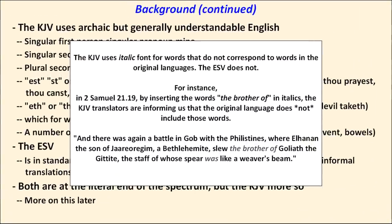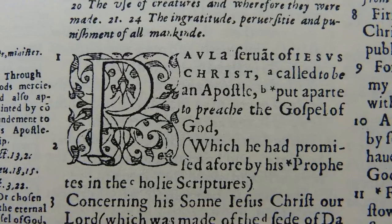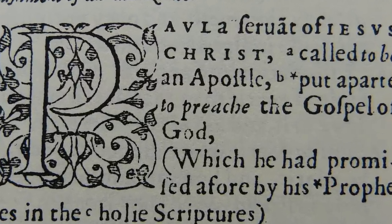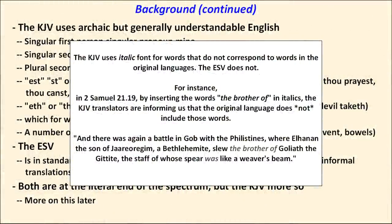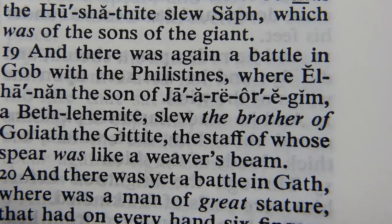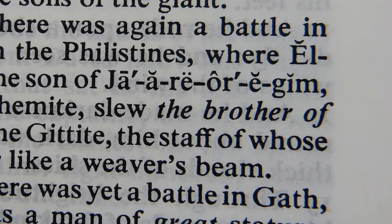One other significant difference is that the KJV uses italic font for words supplied by the translators but which don't map to words in the original language. That use of italics started with the Geneva Bible. As an aside, I sometimes hear it said that modern translations are in error in 2 Samuel 21:19 because they state that Elhanan killed Goliath. But to those who know what the italic font means, the KJV says the same thing.